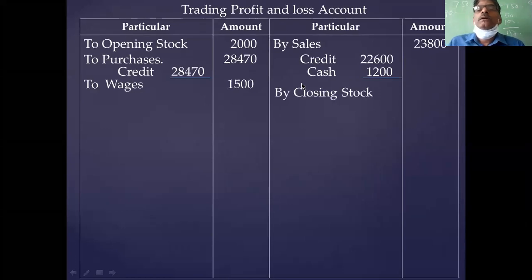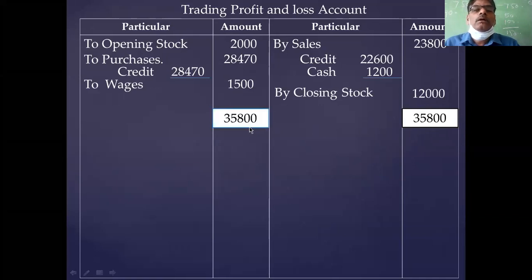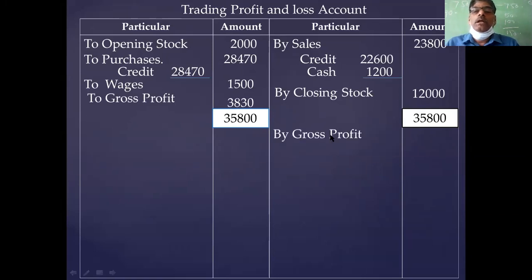Next item: closing stock — from the problem, closing stock is 12,000. Close the trading account. Trading account total is 35,800 on both sides. Difference is 3,830 — this is gross profit. Take the gross profit to the P&L account: 3,830.